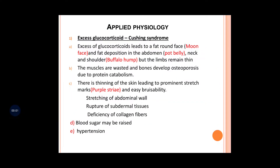In applied physiology, Cushing syndrome is a very important topic that comes in exams. Cushing syndrome occurs whenever there is excess glucocorticoid — meaning more and more cortisol in the body. There are certain characteristic features: moon face, pot belly, and buffalo hump.